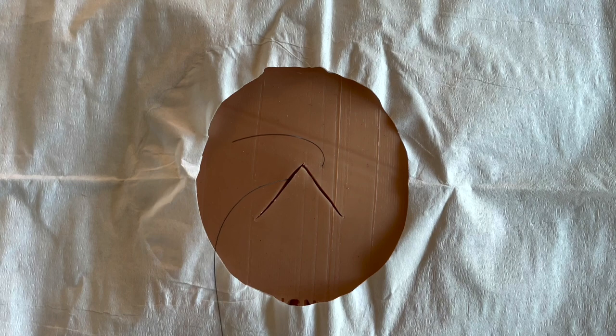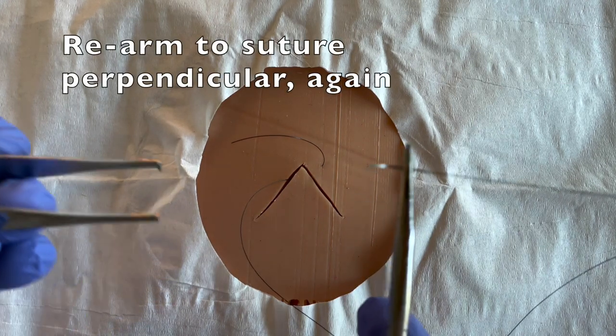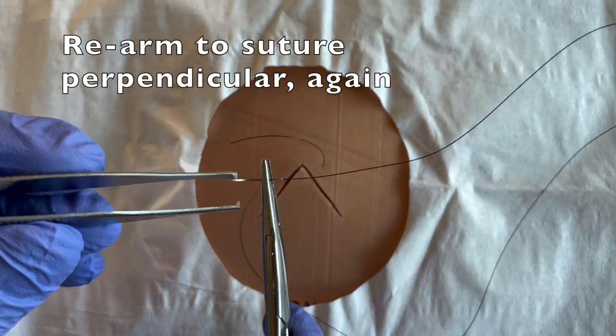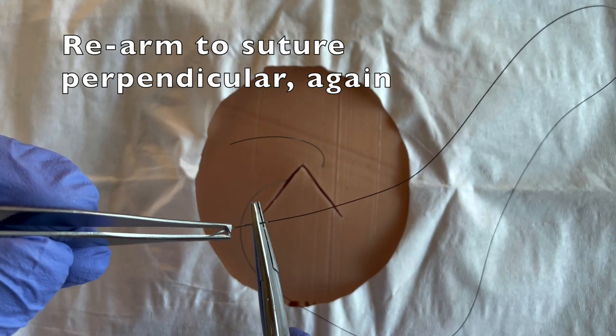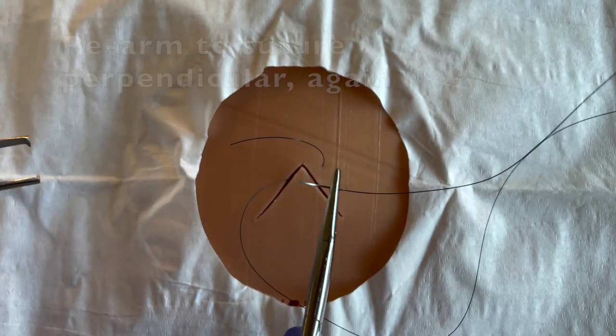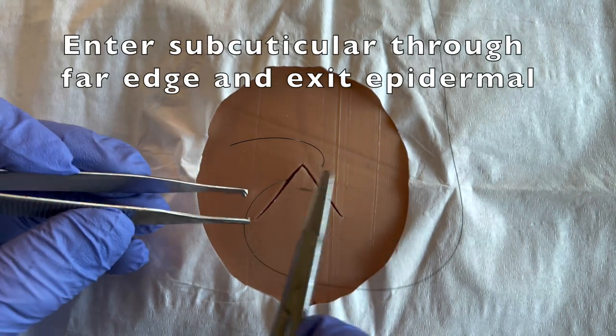When you get to the other end of the wound, you'll again rearm your suture needle, this time back to perpendicular as you did with your very first throw, because now you're going to throw subcuticular to epidermal.